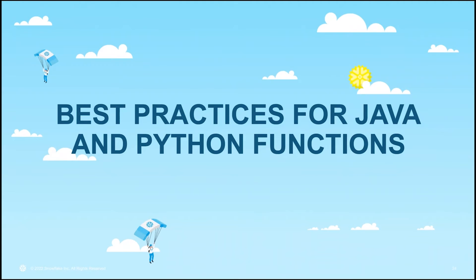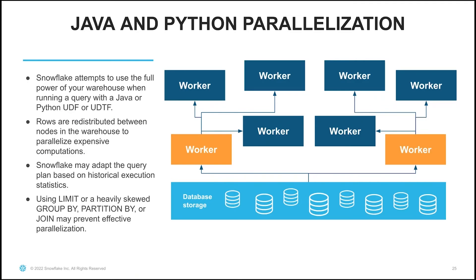Now let's look at some best practices for Java and Python functions. A note on parallelization: when you run a query that uses a Python or Java UDF, Snowflake attempts to use the full power of your warehouse. We redistribute rows between nodes in the warehouse to help parallelize expensive computations, and we collect some historical statistics to see if your UDF is fast or slow, using that to determine how we distribute work among workers. If you use a LIMIT clause in your query, or a heavily skewed GROUP BY, PARTITION BY, or JOIN, that may prevent our ability to effectively parallelize your query.